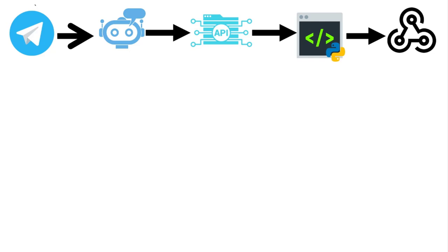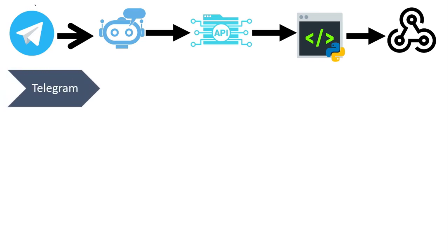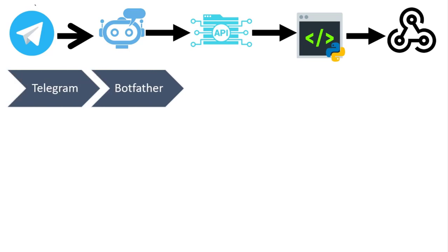Welcome everyone to this lesson. I'm going to show you the high-level steps we are going to follow in order to create a successful automation using a Telegram bot. First, we need to have a Telegram account, and using that we are going to interact with BotFather, which is going to give us a bot and also a token, which is like a password for that bot.